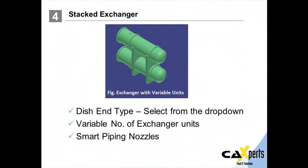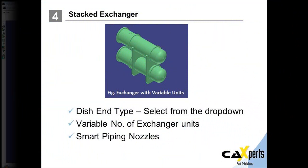In this next example, we can see a stacked exchanger symbol. The symbol allows you to select different end types, define the number of exchangers, and includes smart piping nozzles.